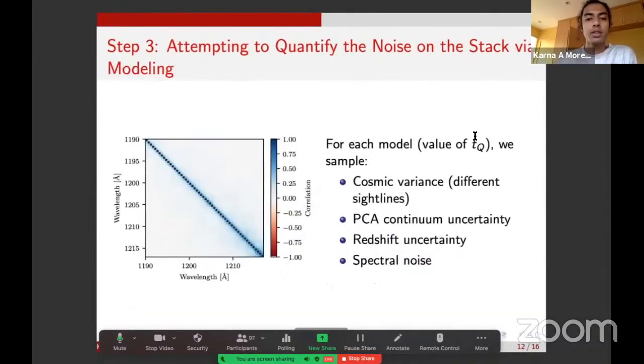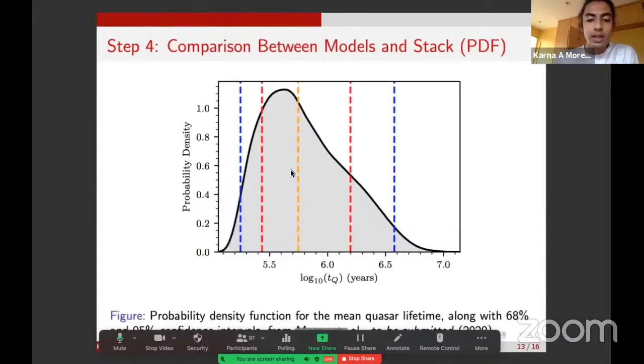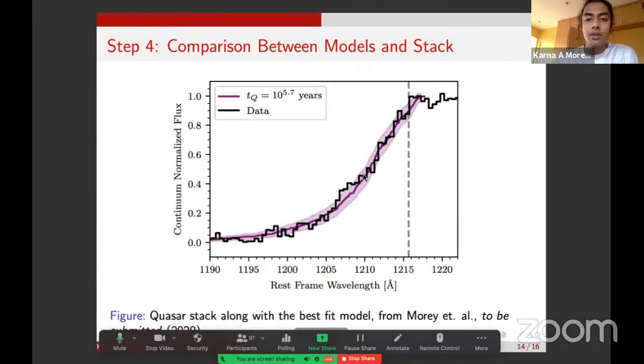Finally, we can use these covariance matrices, and we obtain one for each value of TQ. We can use these covariance matrices to directly infer the lifetime. The value that we get here is the posterior distribution. The median lifetime is 10 to the 5.7, and shown here are the 68% and 95% confidence intervals. Here's also a plot of the comparison between the data and the models. In purple is the model or the mean model from all the mock stacks, along with the one sigma uncertainty on it, which is basically the diagonal of the covariance. You can see it fits the data fairly well.